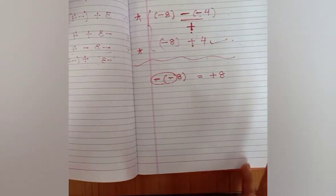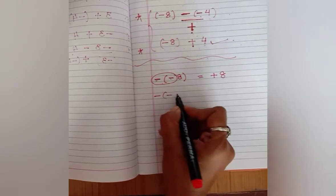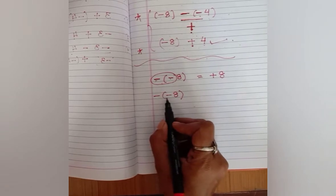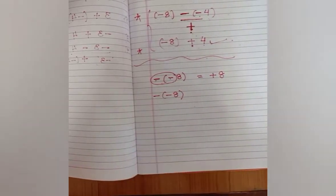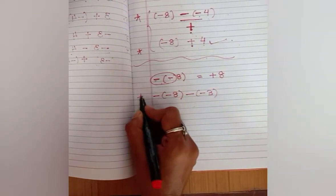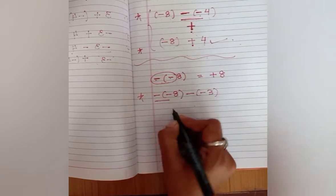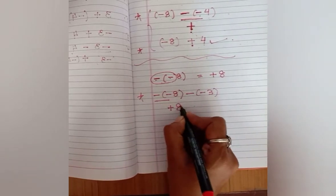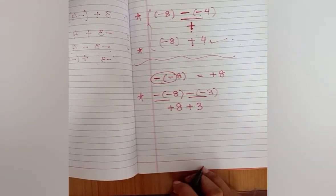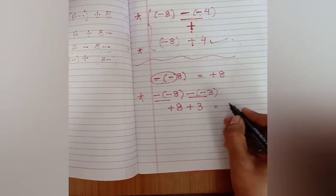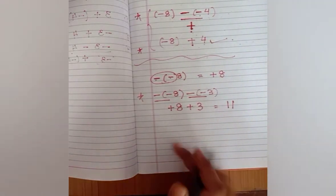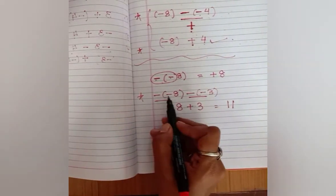Similarly, minus into minus bracket eight becomes plus eight. And for minus minus minus eight minus minus three: minus into minus becomes plus eight, and again minus into minus becomes plus three. So it is simply eight plus three, which equals eleven. Don't get confused with minus and plus signs.